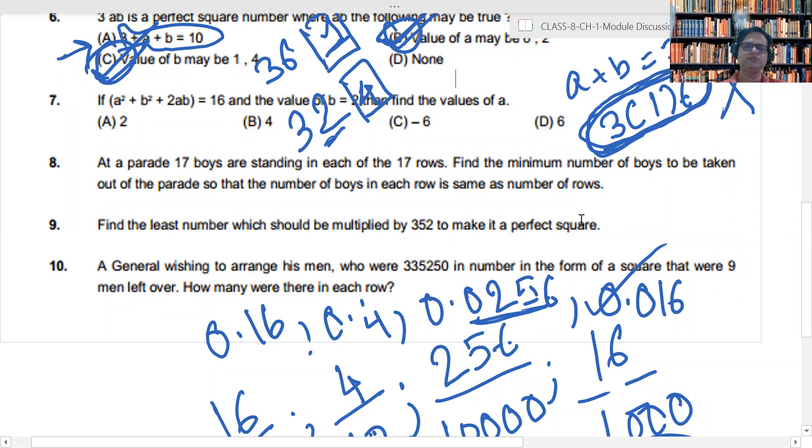Yes, sir. Sir, what I have done is I have taken the formula of A square minus B square. So, sir, I have done after that 17 square minus 16 square. So, sir, it will be 33. No. Sir, same. I also did like that.